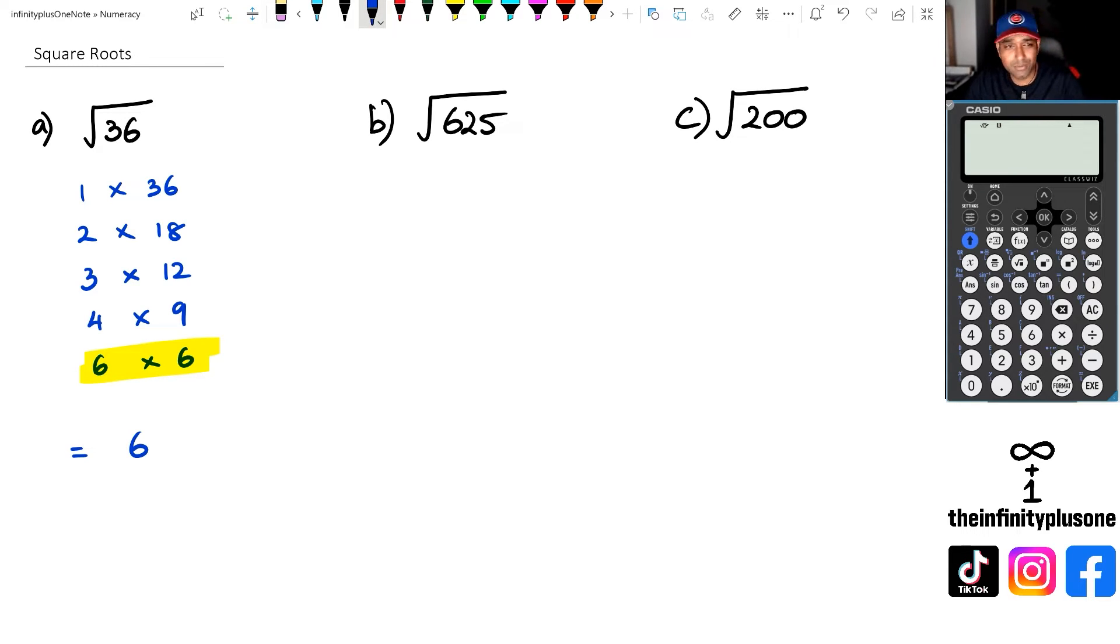Now of course you don't have time to do all of this. What you want to be doing is putting this straight in the calculator and working it out. In this particular calculator model, the square root button is right there, so I'm just going to click on square root and I'm going to punch in 36, and that should give me 6 straight away.